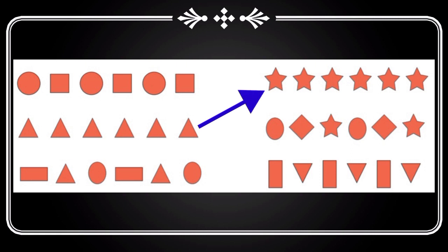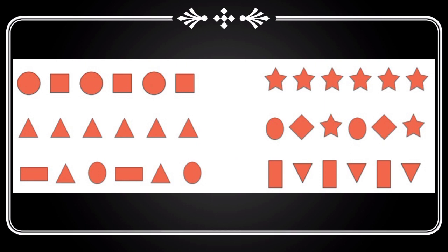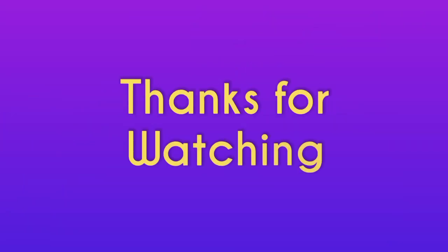Next, the third question: triangle, triangle, triangle, circle, rectangle, triangle, triangle, circle — which is the right pair? The right side second one is the answer. Circle, diamond, star, circle, diamond, star — three shapes are repeating.